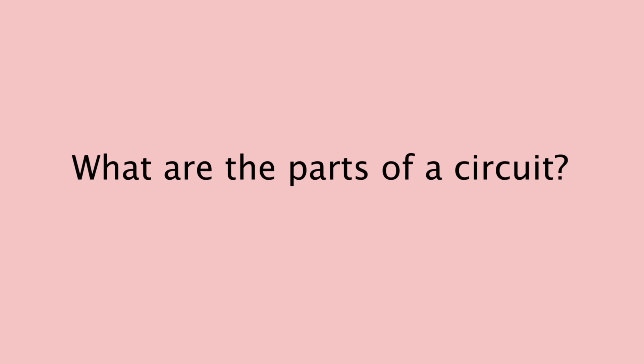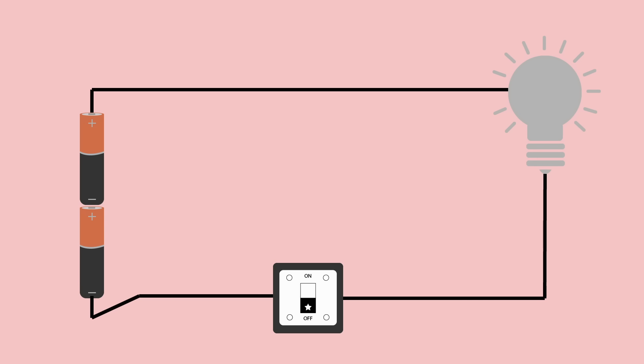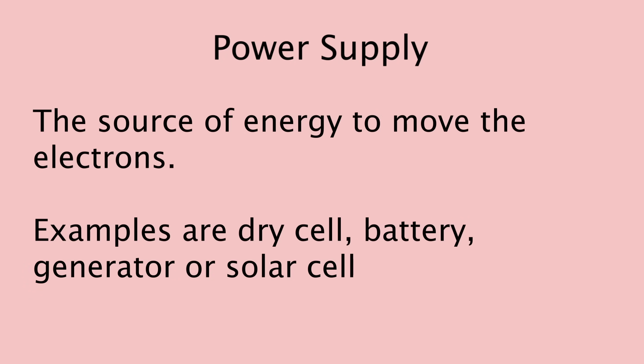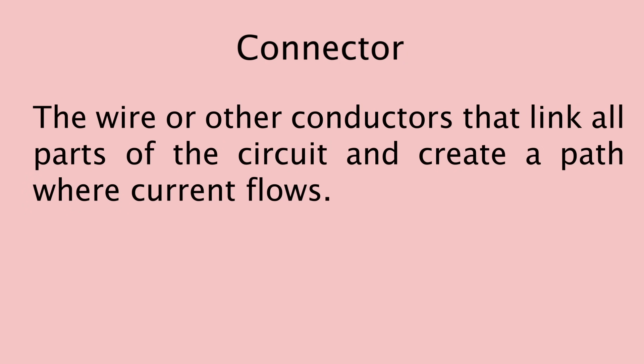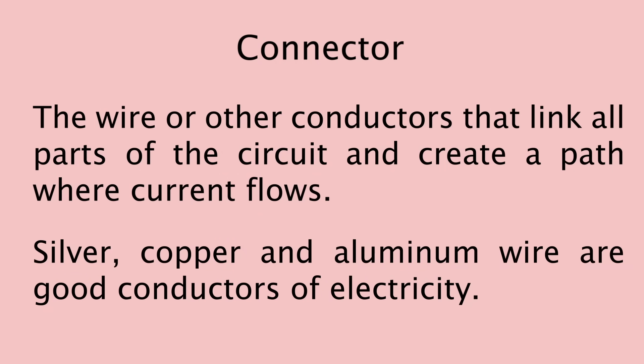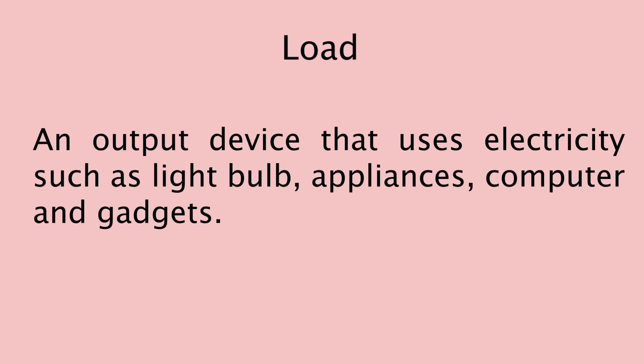The path through which a current flows is called a circuit. What are the parts of a circuit? An electric circuit is composed of the following components. First is the power supply — it is the source of energy to move the electrons. For example, dry cell, battery, generator, or solar cell. The next part is the connector — these are the wires or other conductors that link all parts of the circuit and create a path where current flows. Silver, copper, and aluminum wire are good conductors of electricity. The third part is the load — it is an output device that uses electricity, such as a light bulb, appliances, computers, and gadgets.